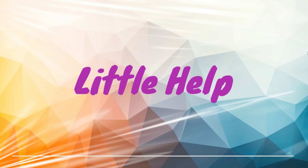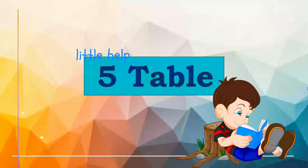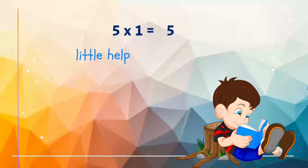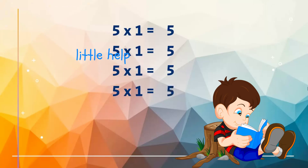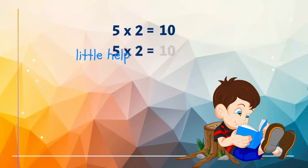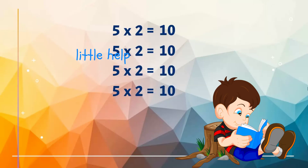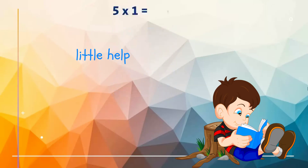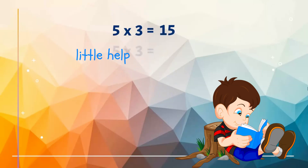Beat to memorize — let's learn the five times table! Five ones are five. Five twos are ten. Five threes are fifteen.